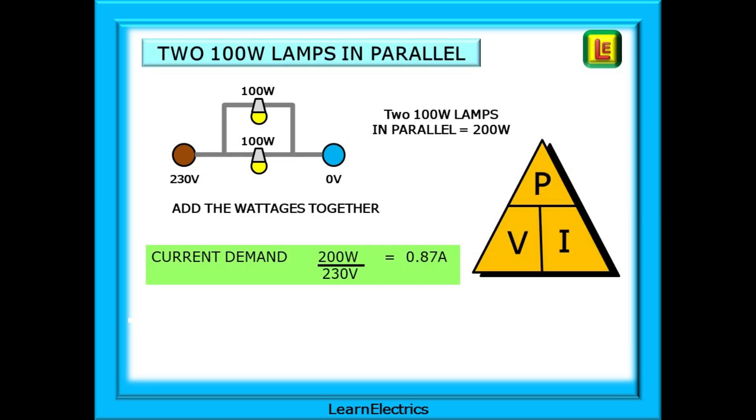With two 100 watt lamps in parallel we have 200 watts of lighting energy, so how much current is that? With a parallel circuit two lamps will draw more current than a single lamp, so 200 watts divided by 230 volts is 0.87 amps: twice the current, twice the amount of light.